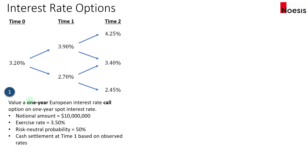Starting with example one, we will value a one-year European-style interest rate call option on a one-year spot interest rate. The notional amount is $10 million, the exercise rate is 3.5% of the par or notional, the risk-neutral probability is 50%, and cash settlement will be at time one since it expires in one year. The observed rates at time one are 3.9% if the interest rate goes up, and 2.7% if the interest rate goes down.